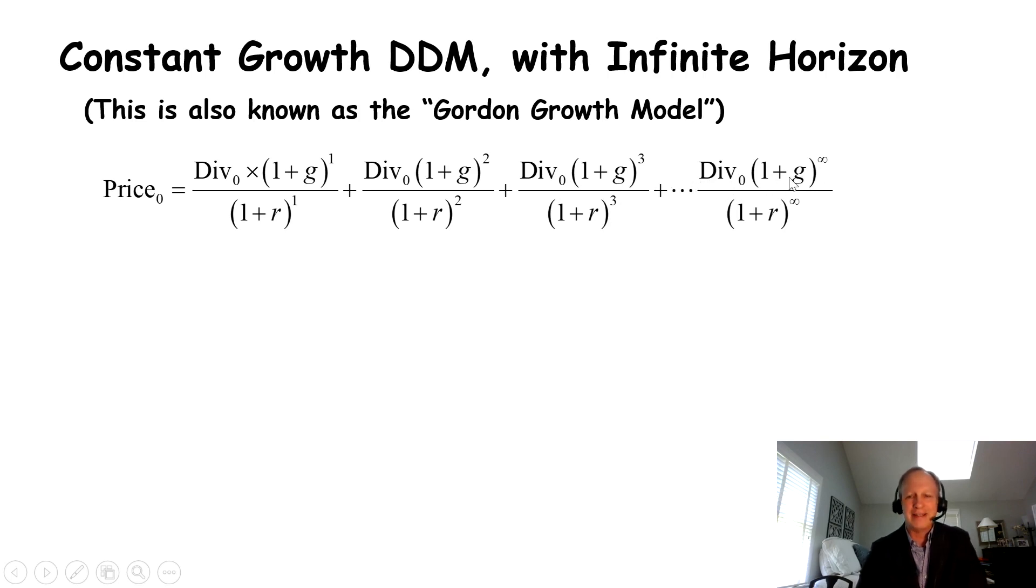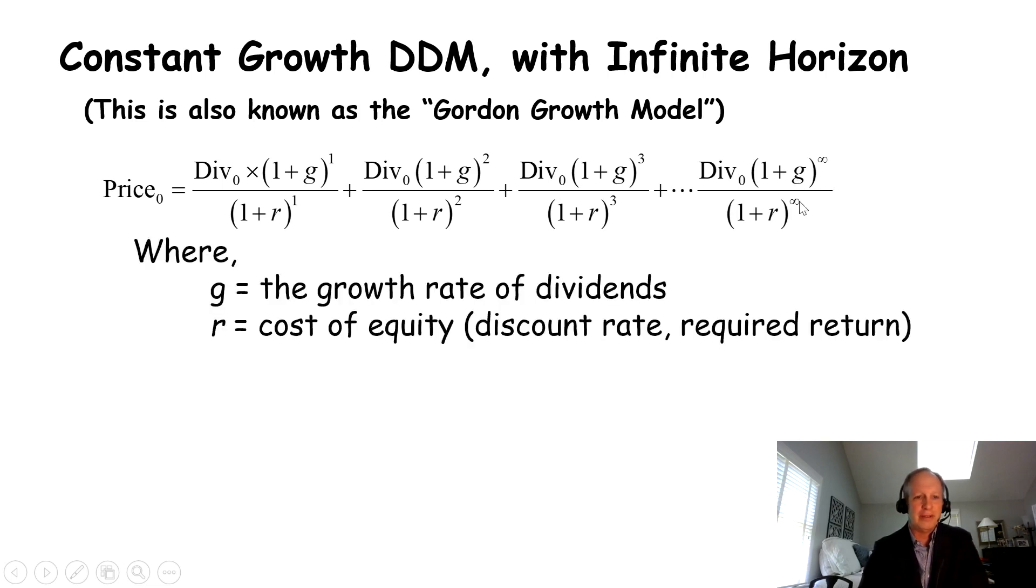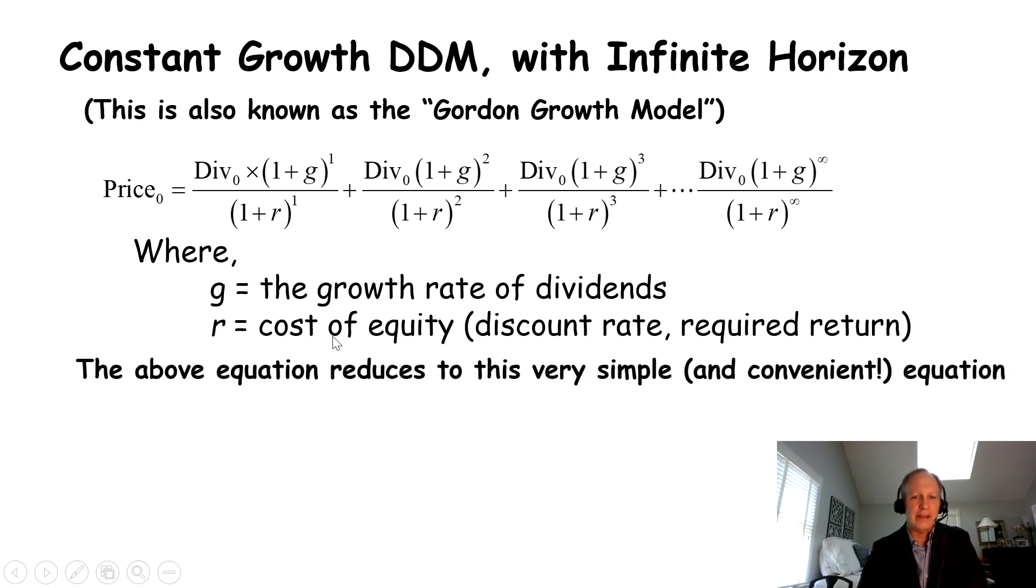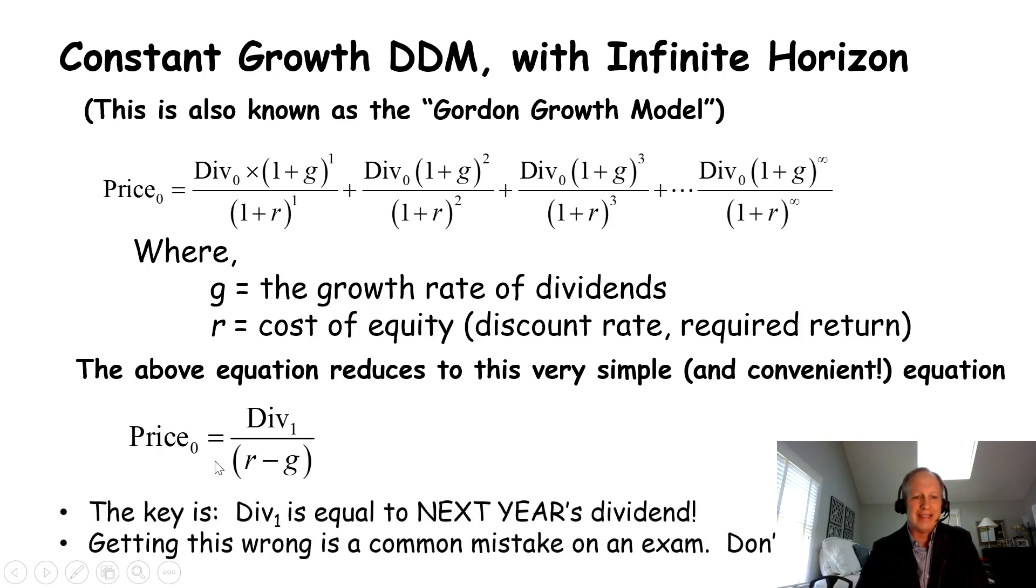So we assume that they last to infinity. And of course, we can't predict dividends out to an infinite horizon, so we need a shortcut. So the beauty is we've got this Gordon growth model that greatly simplifies it. If we've got the growth of dividends and we've got the cost of equity, we get this very simple equation. The price of the stock. So this up here reduces down here algebraically to next year's dividend divided by R minus G, the cost of capital minus the growth rate.